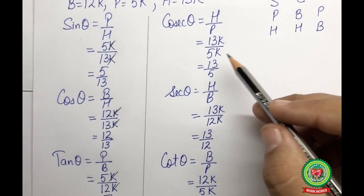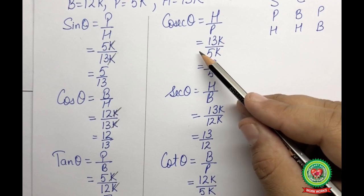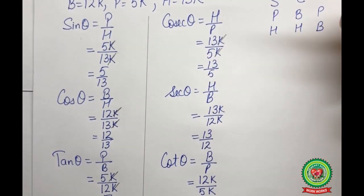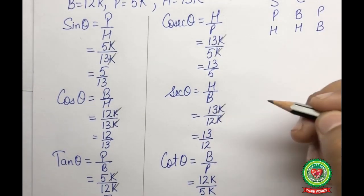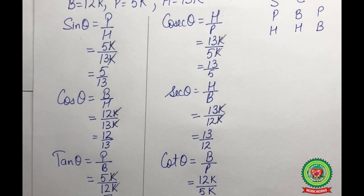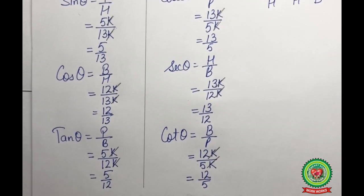Cosec theta = h/p = 13k/5k = 13/5. Sec theta = h/b = 13k/12k = 13/12. Cot theta = b/p = 12k/5k = 12/5. Students, you have got a worksheet in your Snap Homework based on this topic — solve those problems. Thank you and have a nice day.